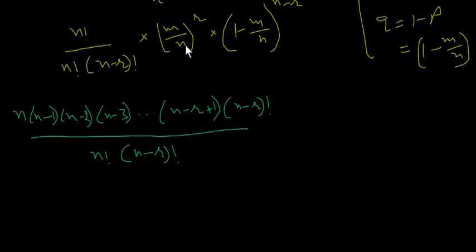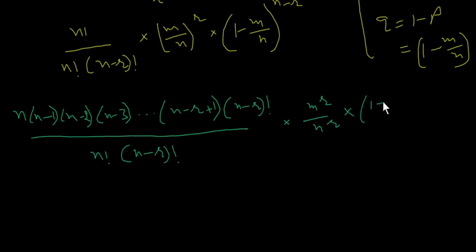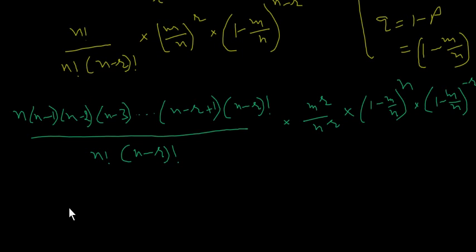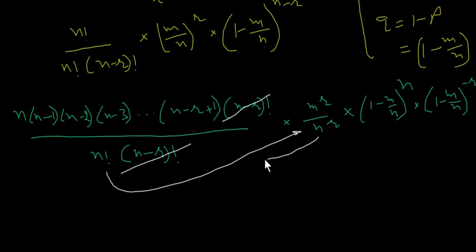Then we multiply by m to the power r over n to the power r, and we also open 1 minus m divided by n to the power n, and multiply by 1 minus m divided by n to the power minus r. When we combine these, the common terms will cancel and we rearrange this expression. We are now converting and rearranging the terms.